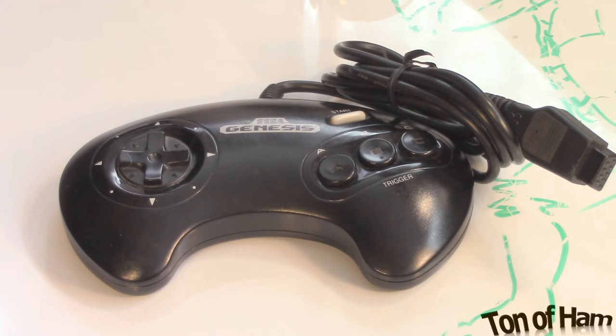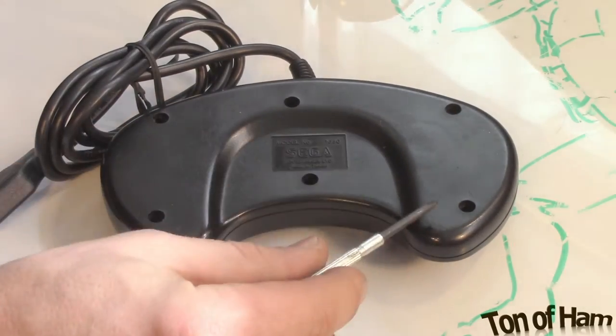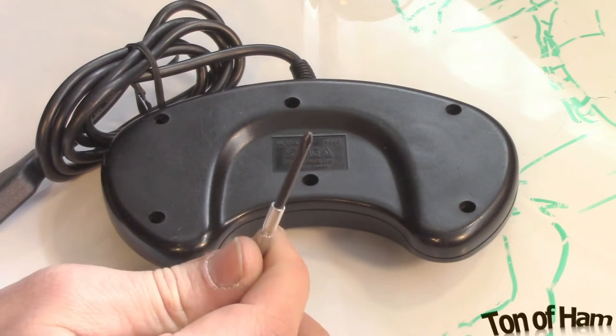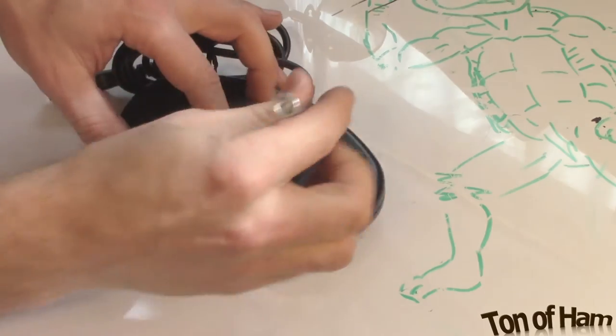Let's get started. First thing you'll need is to locate the screws on the back of the controller. Flip it over, you'll see six screws. These are Phillips head screws. Got my trusty Phillips head screwdriver and I'm going to take them out.